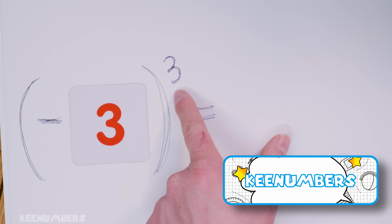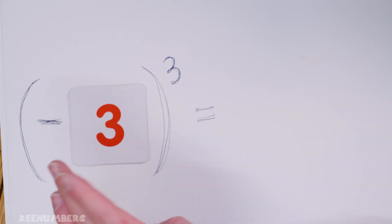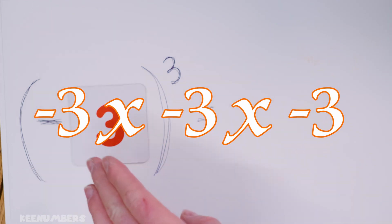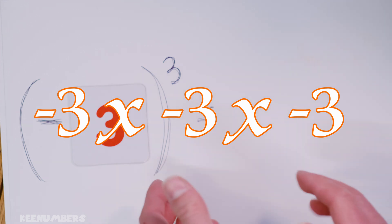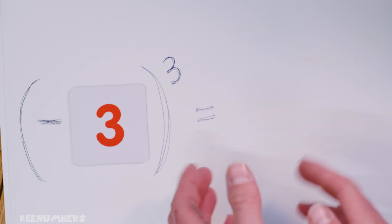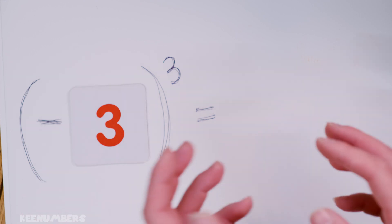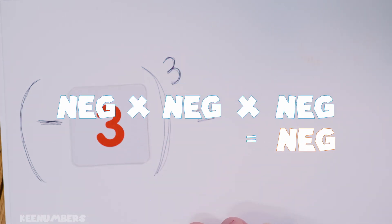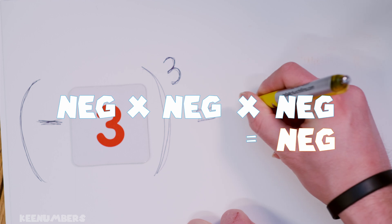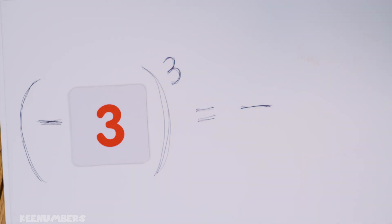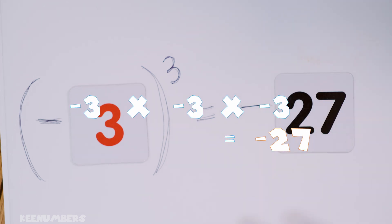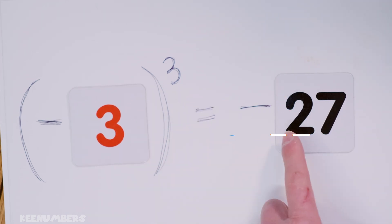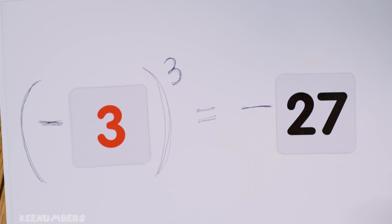What's negative three cubed? Don't get scared now. We're talking negative three times negative three times negative three. A negative times a negative makes it positive, but when you multiply by another negative, a positive times a negative is going to make it negative. What's three by three by three? Three threes is nine, and nine threes is 27. So negative three cubed is negative 27.